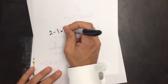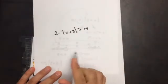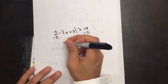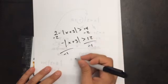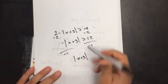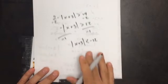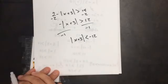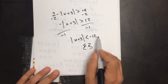The ones in class will be tougher. For example, two minus the absolute value of x plus three is greater than 14. First, subtract two from each side to get negative absolute value of x plus three is greater than 12. Then divide by negative one — the sign flips — giving the absolute value of x plus three is less than negative 12. Since a distance can't be less than a negative number, this is an empty set.